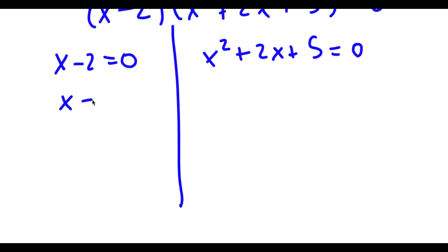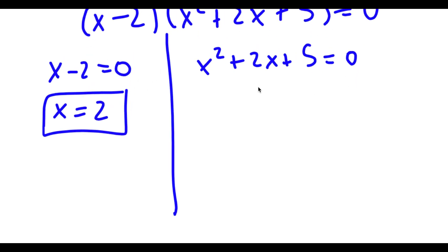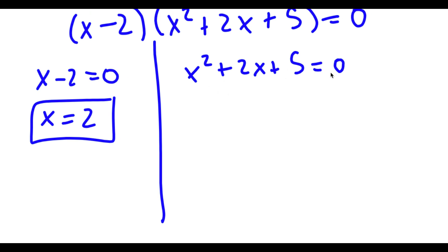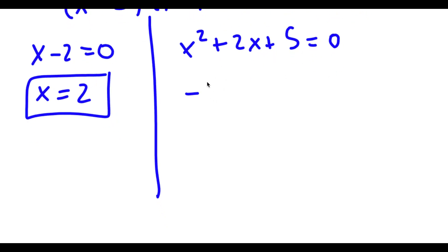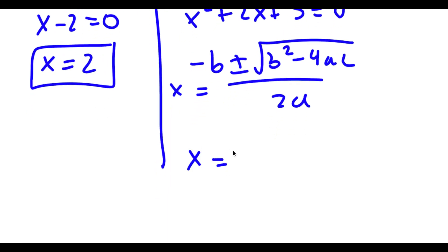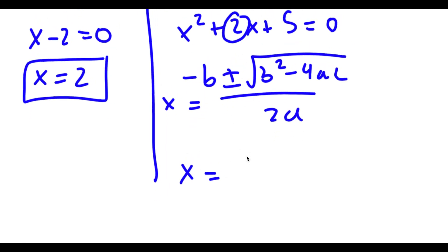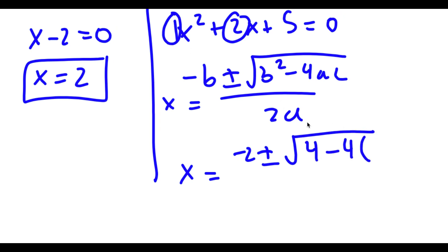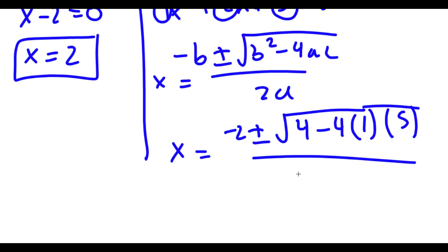For x minus 2 equals 0, x is obviously equal to 2, so this is one solution. For x squared plus 2x plus 5 equals 0, I can use the quadratic formula: negative b plus or minus the square root of b squared minus 4ac, all over 2a. In this case, b equals 2, so I have negative 2 plus or minus the square root of 2 squared minus 4 times 1 times 5, all over 2.